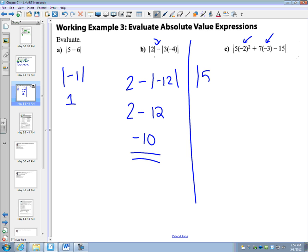So we're going to go 5 negative 2 squared is 4 plus 7 times negative 3 minus 15. 5 times 4 is 20 plus 7 times negative 3 is negative 21 minus 15.